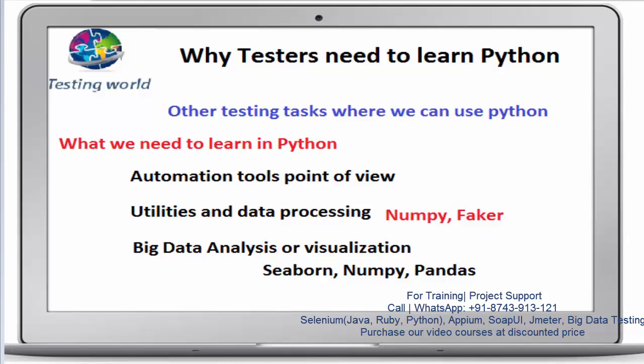If you want to go for utilities and data processing — for example, creating a utility that generates test data or performs mathematical calculations on your data — then start with the Python basics and then move to advanced libraries like the Faker library or NumPy. These are the libraries you can use for creating utilities and data processing, and there are a few more to explore as well.